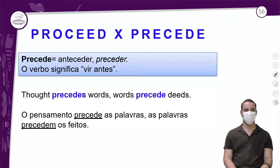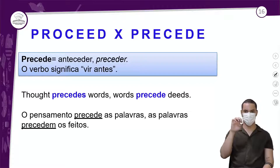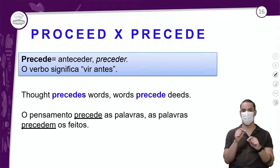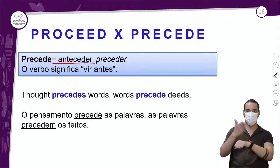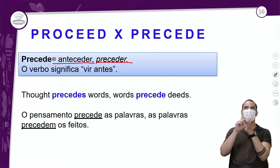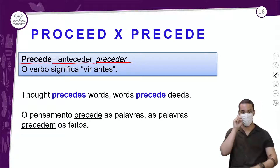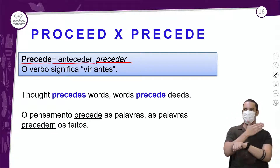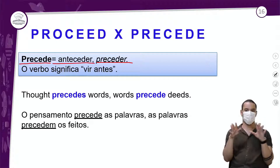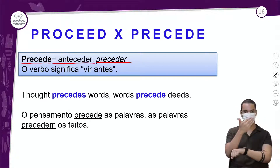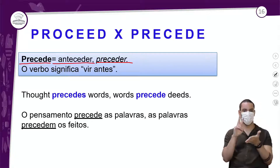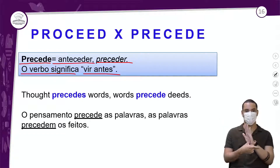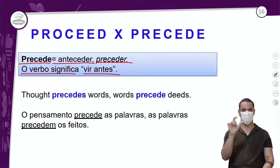Chegou a palavra 'precede'. Ela é diferente — não vai prosseguir, não vai moving on, não vai seguir em frente. Ela vai anteceder, preceder. Quando você olha 'precede', já lembra de 'preceder' — é um cognato. Anteceder é um sinônimo, então tanto anteceder como preceder seria a tradução. O verbo significa 'vir antes'.